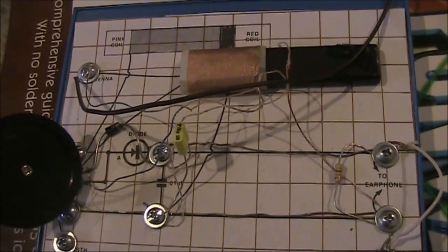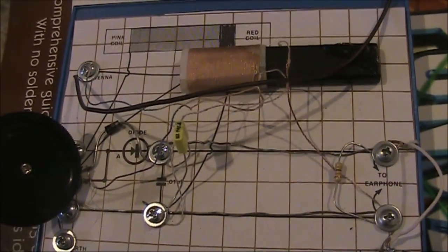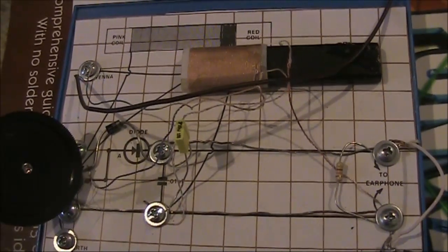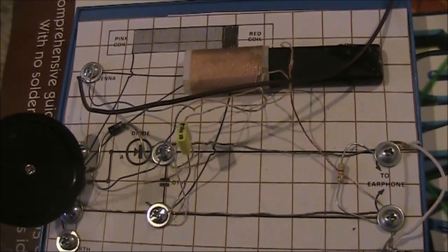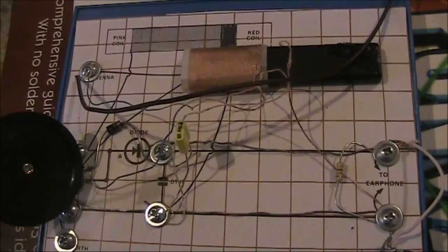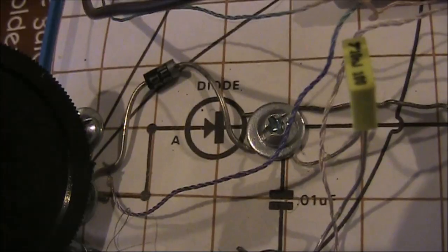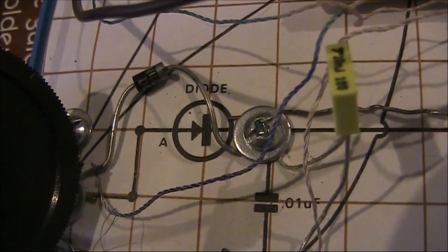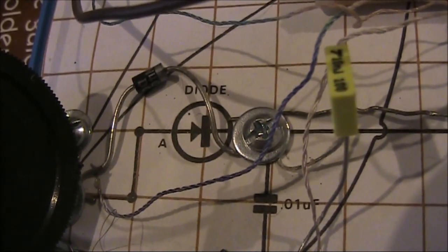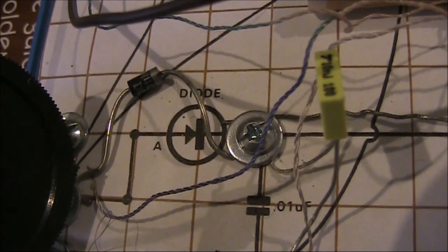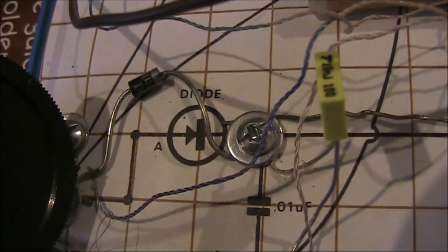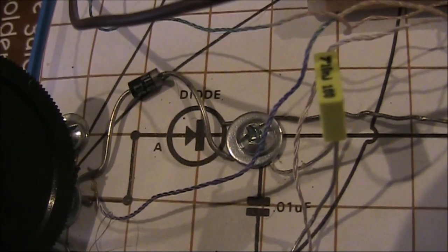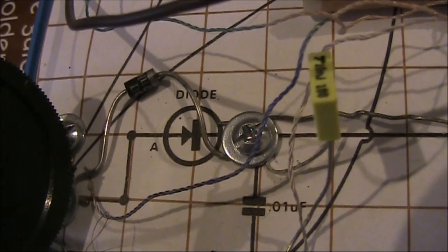The stations that you heard on here were between about 15 and 50 kilometres distant. Some are quite high power, up to about 50 kilowatts. One possibility with the silicon diode, which I haven't tried in this circuit, could be to put some DC bias. Of course that defeats the big selling point of the crystal set. That is a free radio with no batteries.